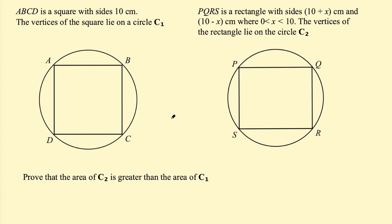This one says: ABCD is a square with sides 10 cm. The vertices of the square lie on circle C1. PQRS is a rectangle with sides (10 + x) cm and (10 − x) cm, where x is between 0 and 10. The vertices of the rectangle lie on circle C2. Prove that the area of C2 is greater than the area of C1.